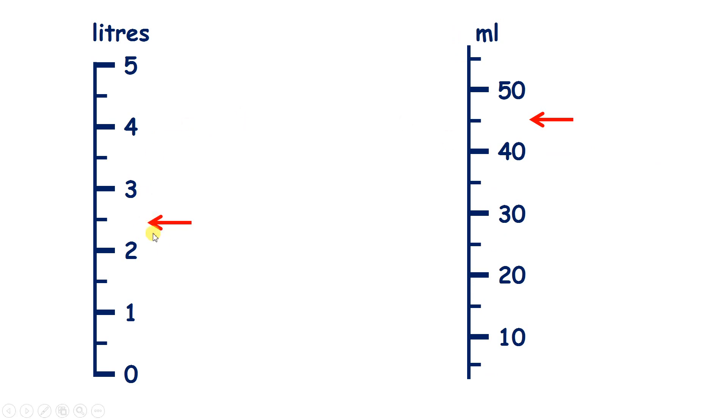Now over here, we have our arrow pointing in the middle of 2 and 3. So it's halfway between 2 and 3, which means we have 2 and a half litres. And how many millilitres do we have here?